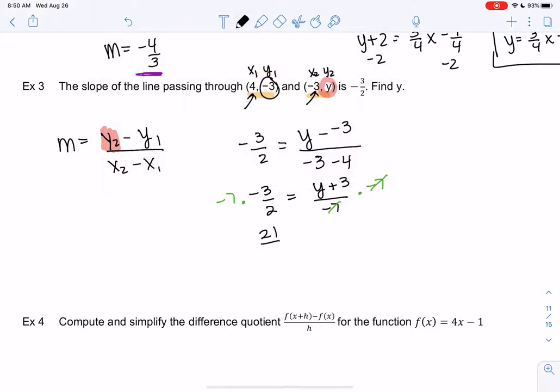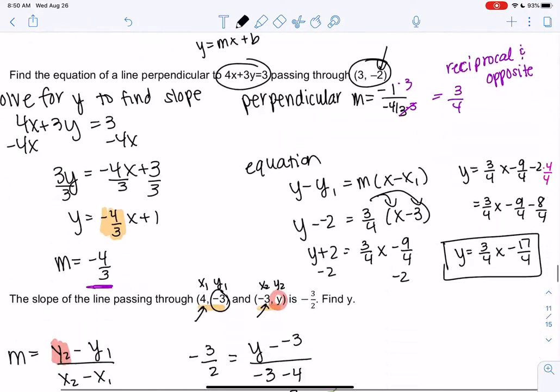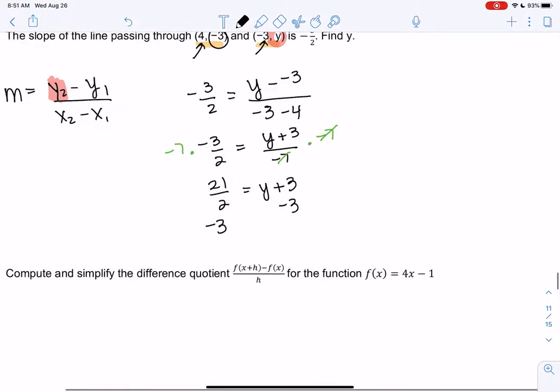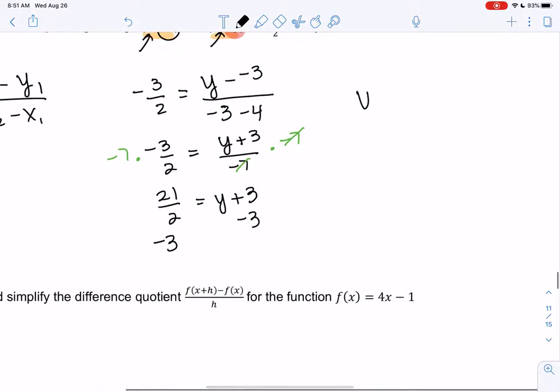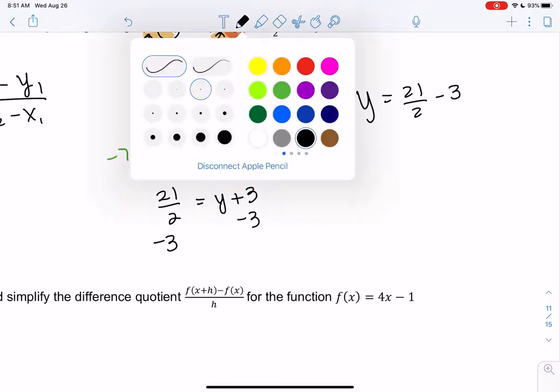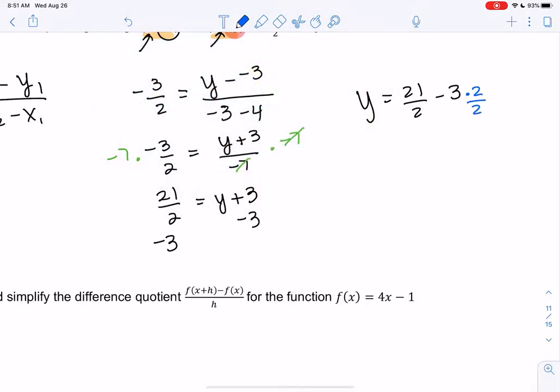So then we get 21/2 = y + 3. I'll just subtract 3 from both sides. So y = 21/2 - 3. We've been doing LCD a little bit. It would just be 2 because 3 doesn't have a denominator. So 21/2 - 6/2, which would be 15/2. So y is 15/2.